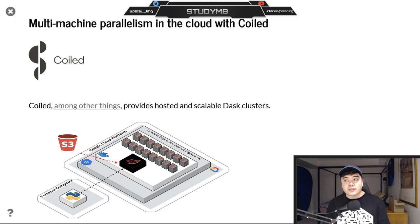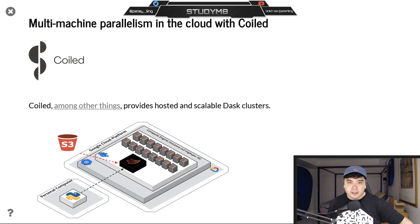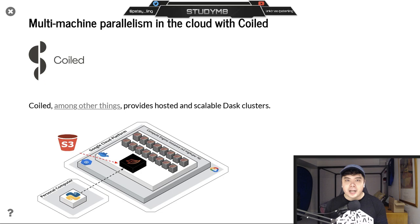For today's video I chose to go with Coiled as our cloud provider. Coiled offers hosted and scalable Dask clusters, so we can from our personal computer just spin up a Dask cluster of any size to work with our data. This is not a sponsored video or an ad — I didn't get paid by Coiled to do this, although my DMs are open. The reason I went with Coiled is just because they were the first provider I was able to run my code snippet with.